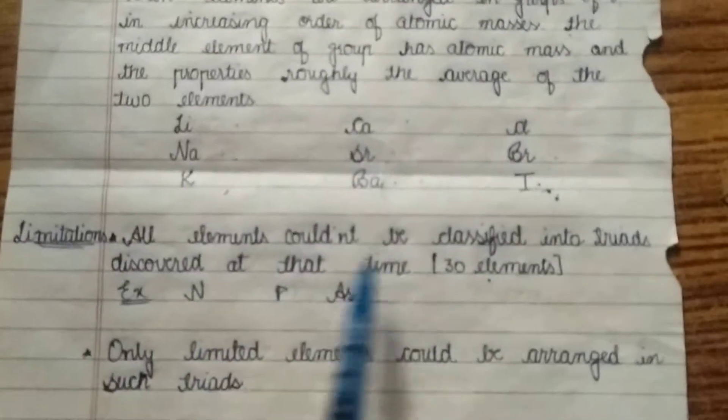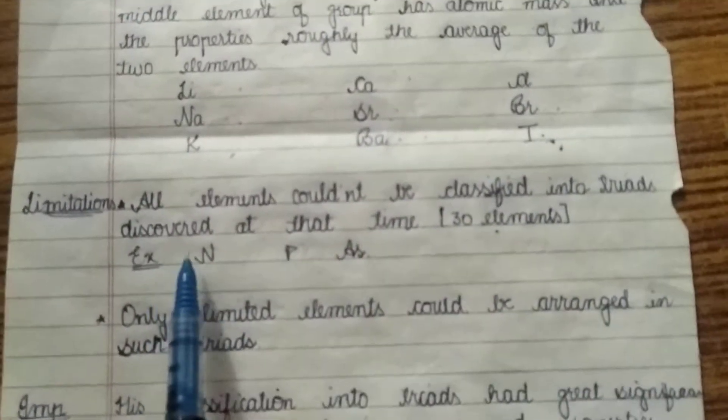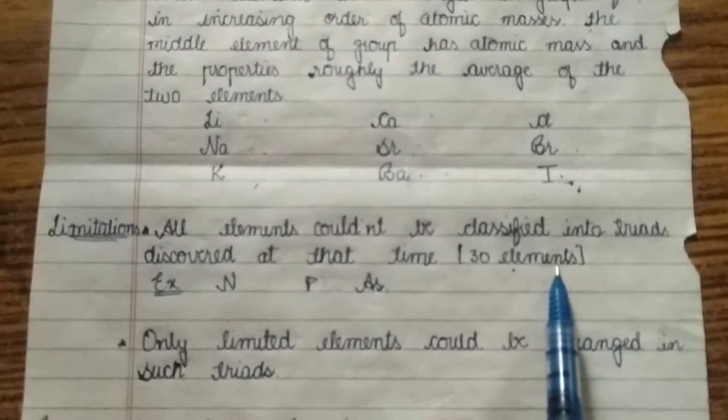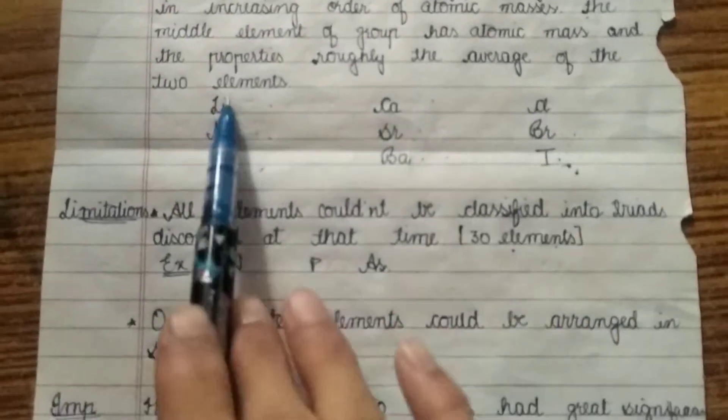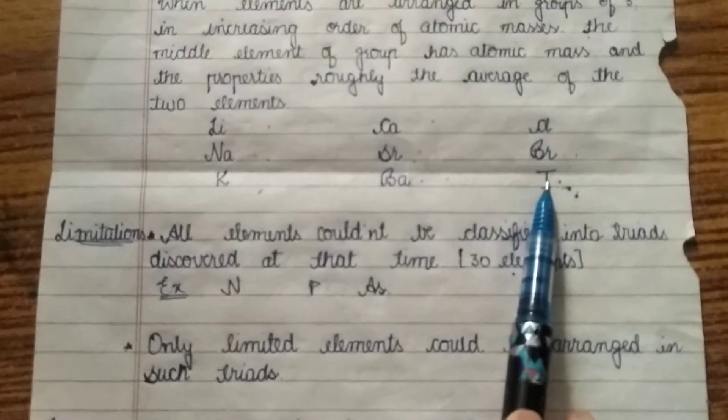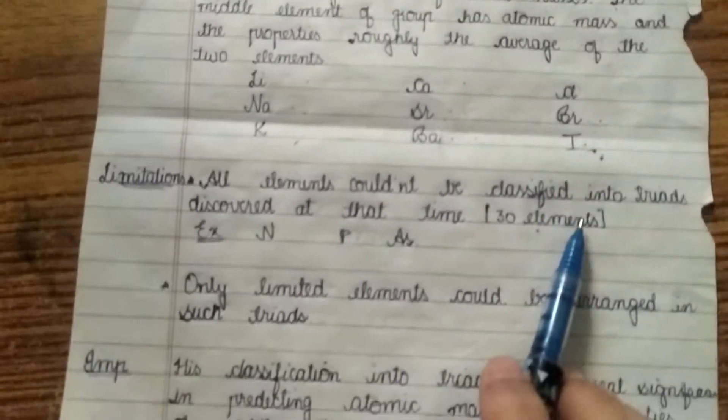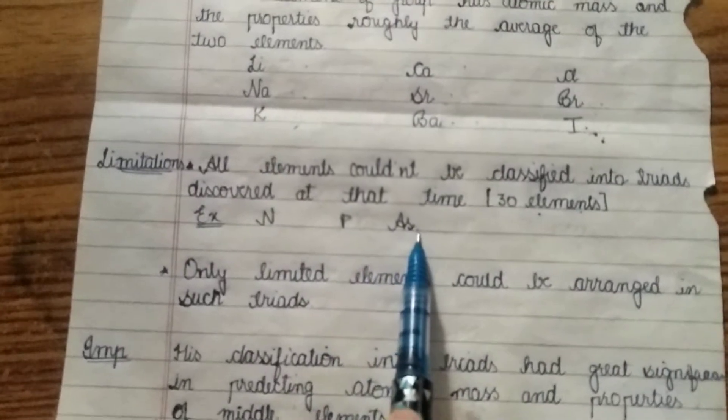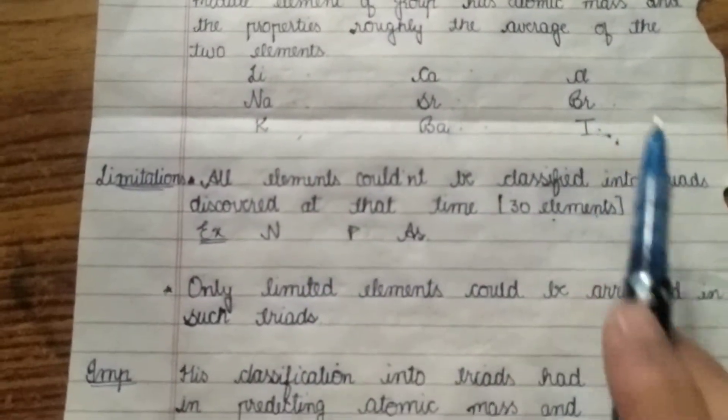Now you can see that all the elements could not be classified into the triads discovered at that time. At that time 30 elements were discovered and only 9 elements can fit in the triads. This is the first limitation. The example is nitrogen, phosphorus and arsenic. This cannot satisfy the group of triads.